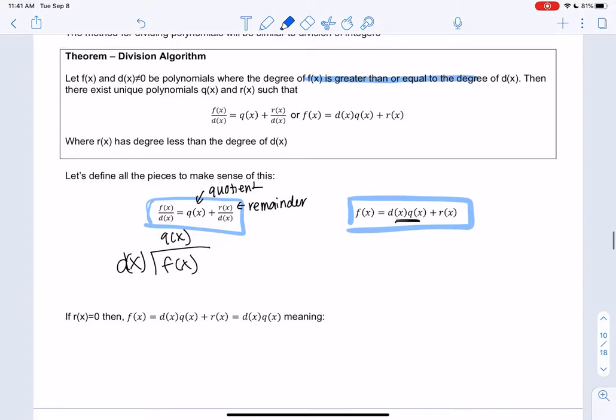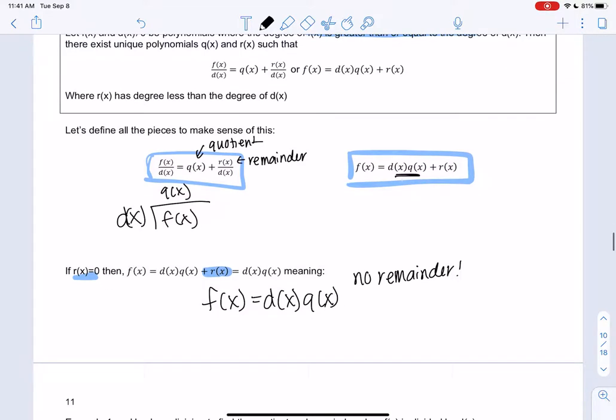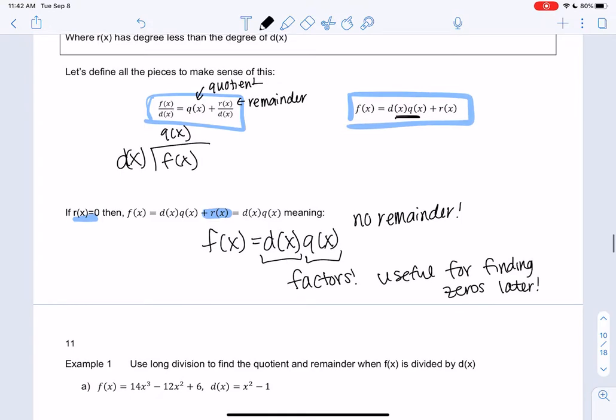And then what's going to be really interesting for us is when the remainder is 0. So if the remainder is 0, this piece goes away, which means f(x) just equals d(x) times q(x), no remainder. And the reason this is interesting to us is because when there's no remainder, that means we've actually factored it. So these would be factors. And so this will be useful for finding zeros later. So our goal is eventually going to be to find things without remainders, but for now we're going to have remainders while we practice the process.